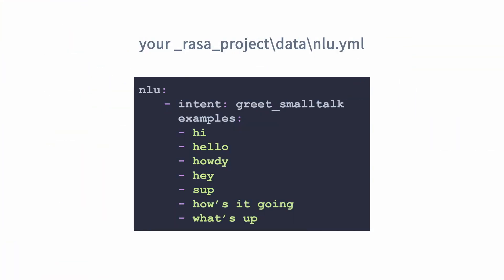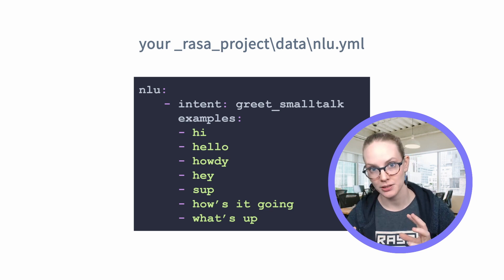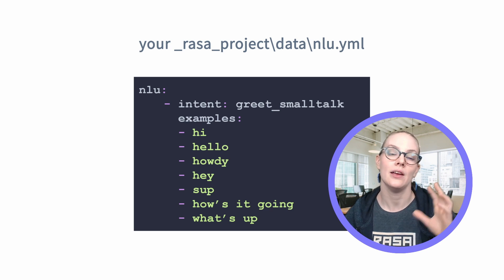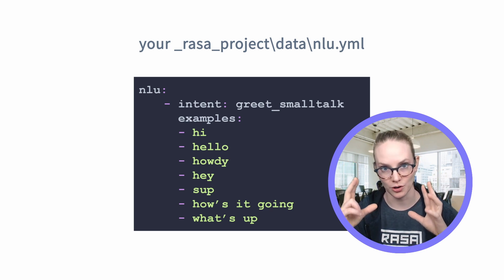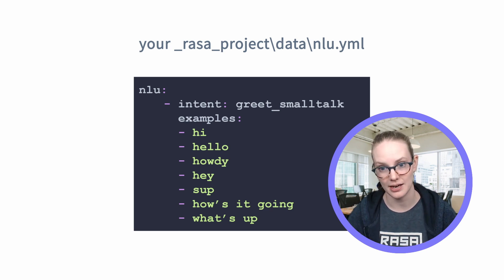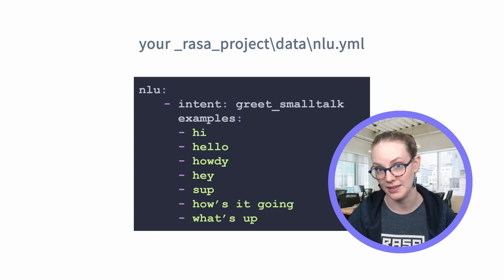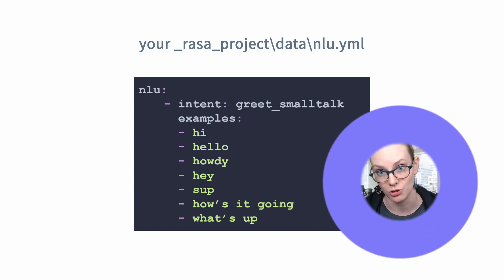Now let's talk about intents. Intents are classes for multi-class classification where each piece of input data is assigned into one of the classes. If you are not using end-to-end learning, all of the things your user can say to the assistant will be captured by a specific intent that you provide. The training data for these are examples of ways to say things so your assistant can recognize them in the future.